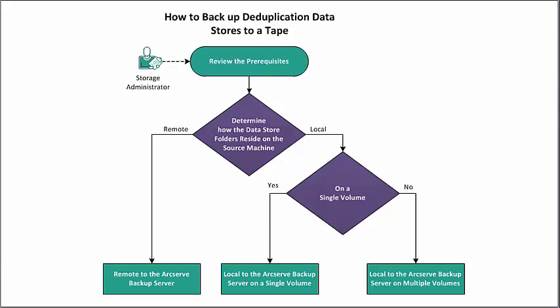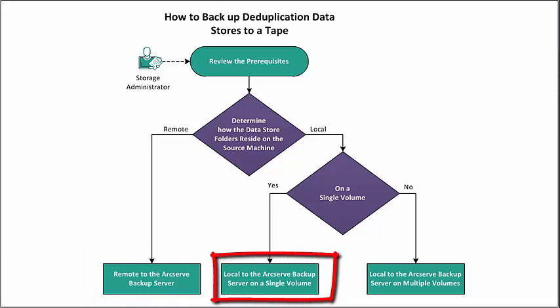Before we get started, in order to successfully back up deduplication data stores to tape, ArcServe UDP needs to integrate with ArcServe Backup. To properly perform this procedure, it's important to know how the data store folders reside on the backup source machine — whether it resides remotely to the ArcServe Backup Server, locally on a single volume, or locally on multiple volumes.